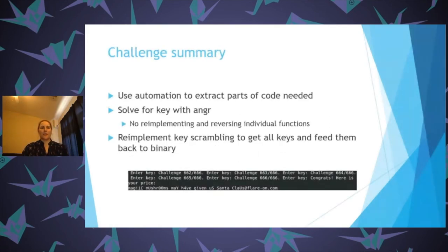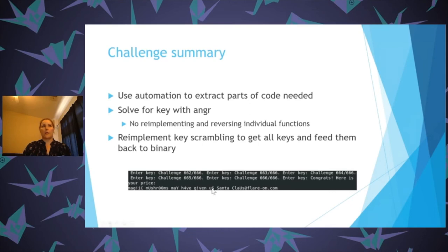To summarize that challenge: we used automation to extract the code parts we needed, then solved for the key using angr. It's not a push-button solution — there's still a lot of other work — but it allowed us to avoid re-implementing each of the seven algorithms. Once you had the first key, re-implementing their key scrambling algorithm let you get all keys, feed them back to the binary, and get the flag.